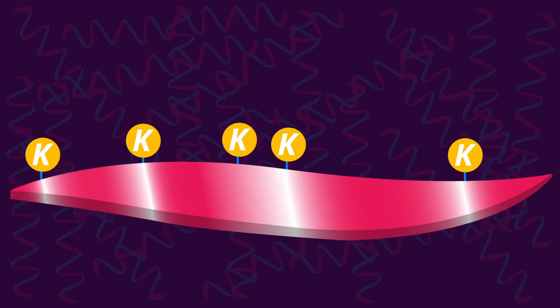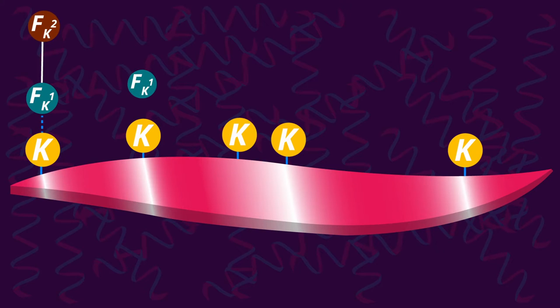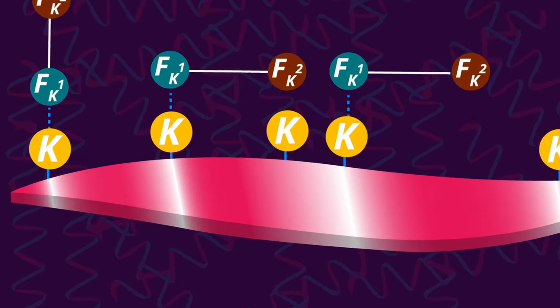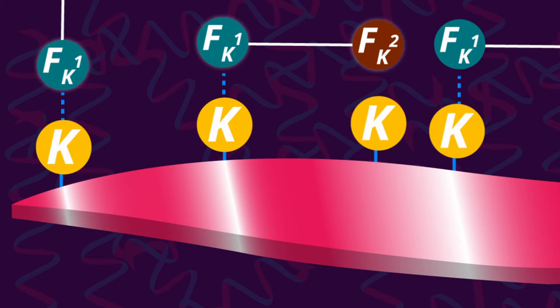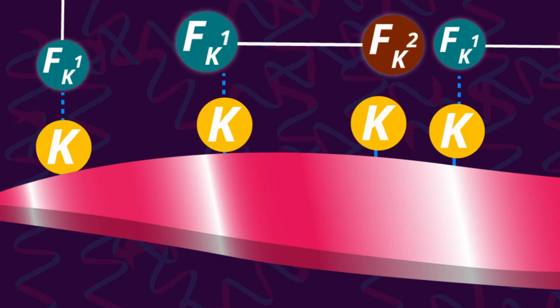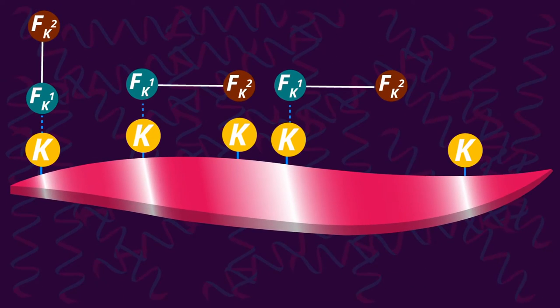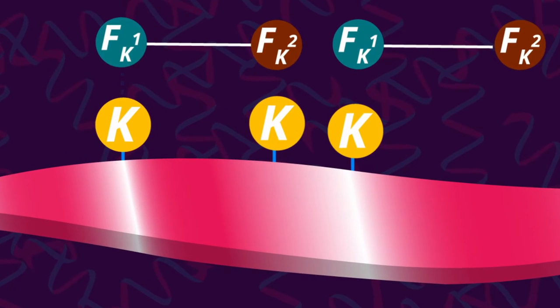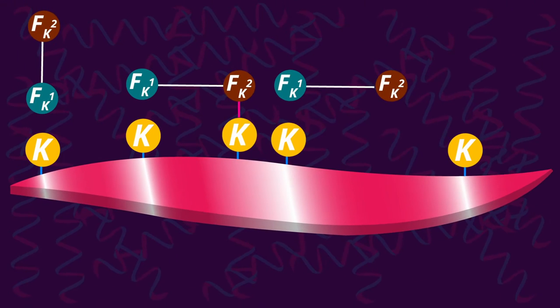The FK1 segment of the reagent chemoselectively reacts with the available functional groups on the protein, and the spacer forms weak interactions with the surface of the protein. This brings the FK2 segment close to the protein, and it forms a covalent irreversible bond with the target site.